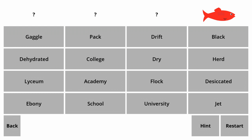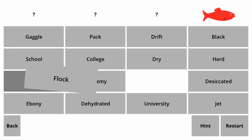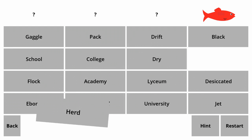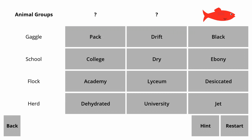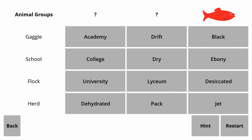Dehydrated, Lyceum, Ebony, Pack, College, Academy, School, Dry, Flock, University, Herd, Desiccated, Jet. We have Gaggle, School, Flock, and Herd — animal groups. And School could have also gone with Academy, College, University. Pack could have gone there, and then School gone in this set, but that's not the case. Academy, College, University — is there anything else that could possibly go?